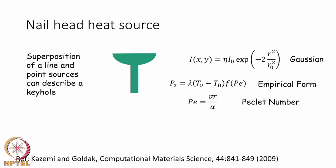There is also what is called a nail head heat source, inspired by the shape of the keyhole itself. The top of the keyhole looks like conduction mode, so the Gaussian heat source is applied there, while the rest of the keyhole is almost cylindrical in shape. An empirical form depending on the vaporization temperature and the ambient temperature of the material is applied to the cylindrical portion.